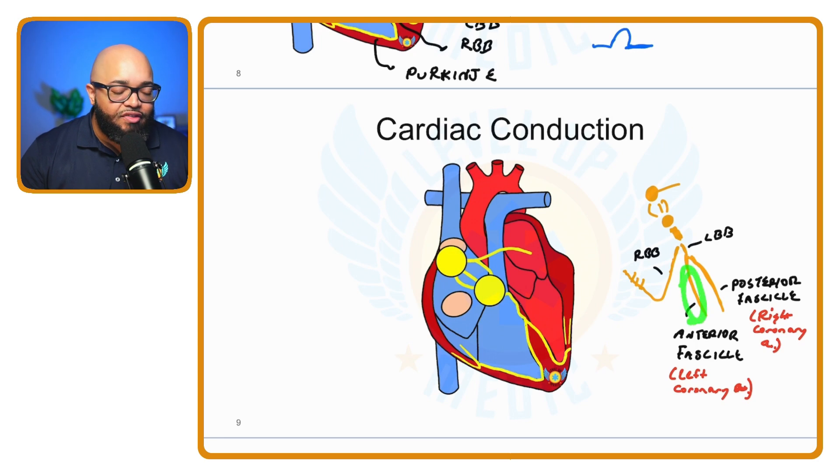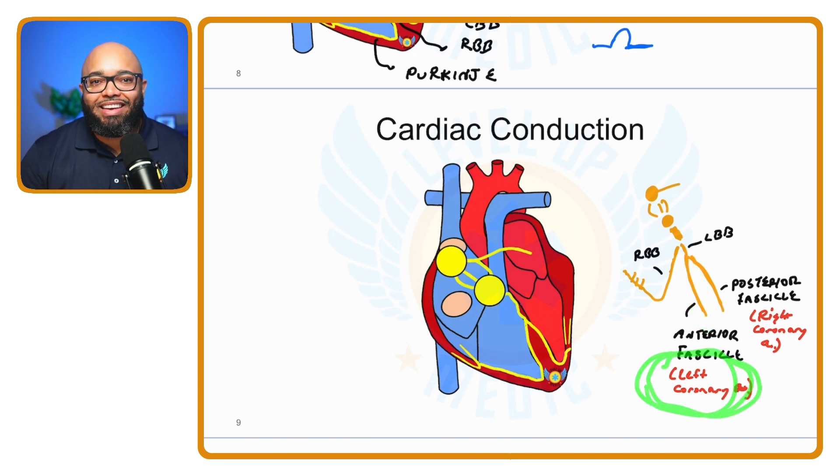The anterior fascicle of the left bundle branch receives blood from the left coronary artery. The posterior fascicle receives blood from the right coronary artery. Why does that matter? If a patient has a blockage in the right coronary artery, that same vessel also supplies the posterior fascicle of the left bundle. An obstructed blood flow could wipe out that fascicle, meaning the back part of the heart doesn't receive any stimulus.